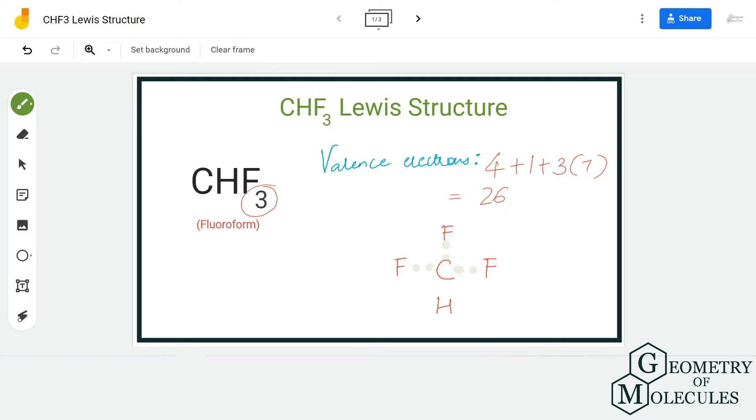And as we all know, hydrogen just needs two valence electrons to complete its octet and attain a stable structure. The hydrogen atom already has a stable structure over here.